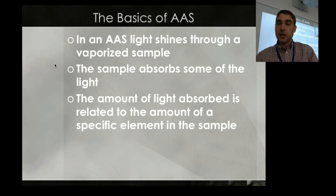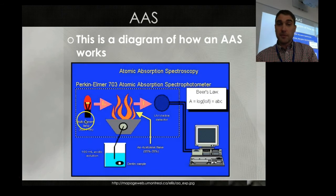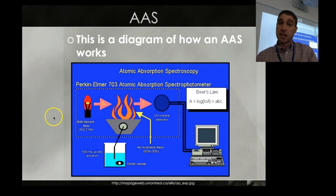In an AAS, you shine a particular light through a sample that you've vaporized. That sample will absorb some of the light that is produced by the lamp. And the amount of light that's absorbed by the sample is proportional to how much of a particular element you have in the sample. You have a lamp. That lamp has to have a particular element in it, and that element is what you're looking for. If you're looking for lead, you need to have a lead lamp. If you're looking for silver, you need to have a silver lamp.